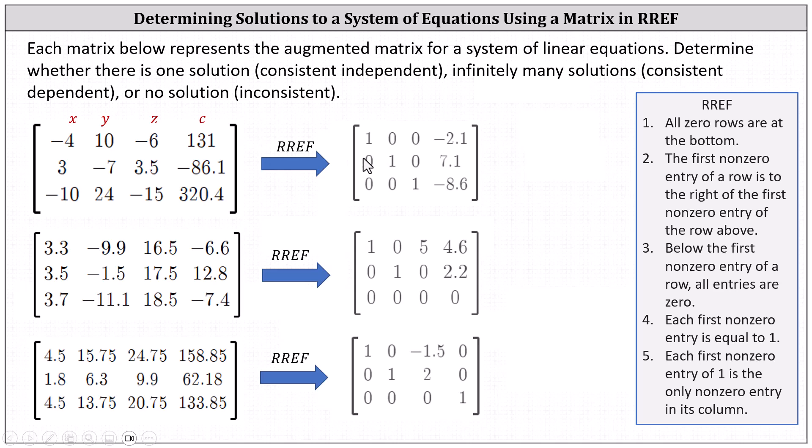The second row represents one y equals 7.1, or y equals 7.1. The third row represents the equation z equals negative 8.6. This indicates there is one solution, and the system can be classified as consistent and independent.